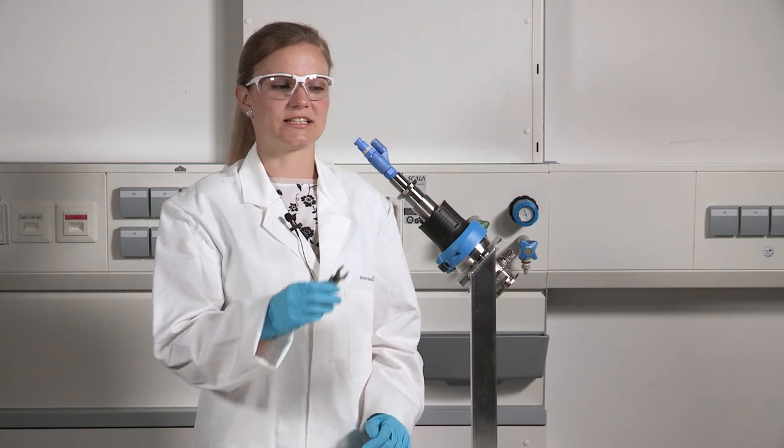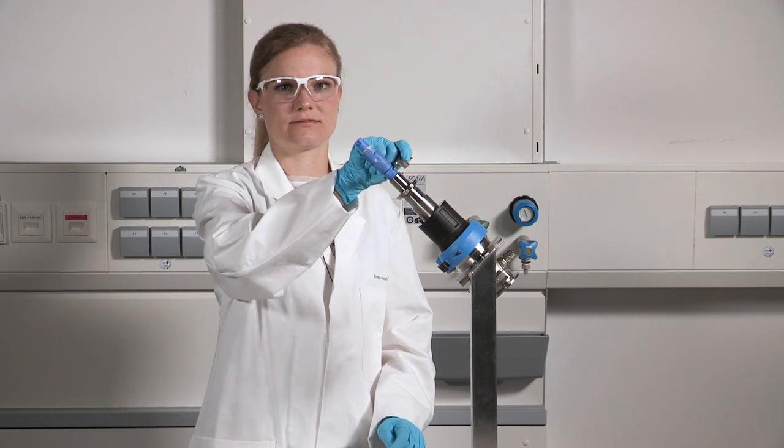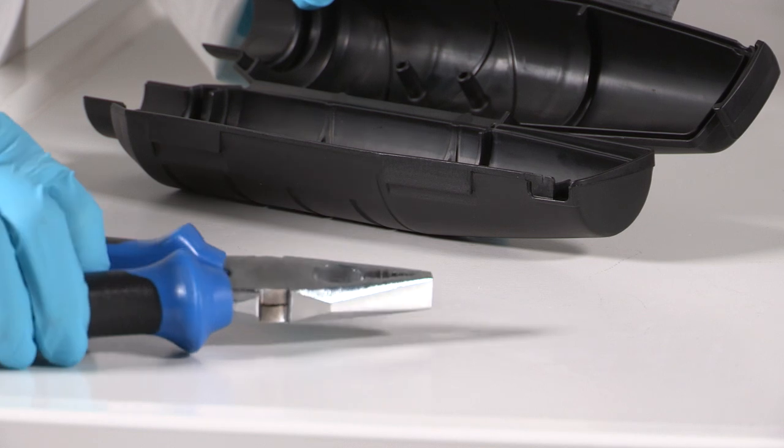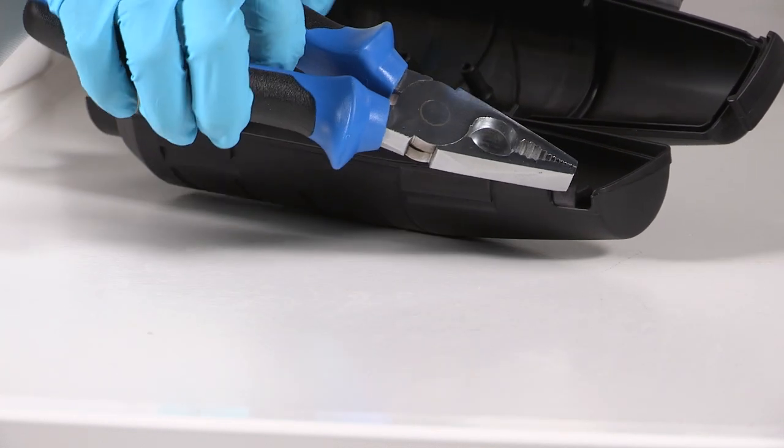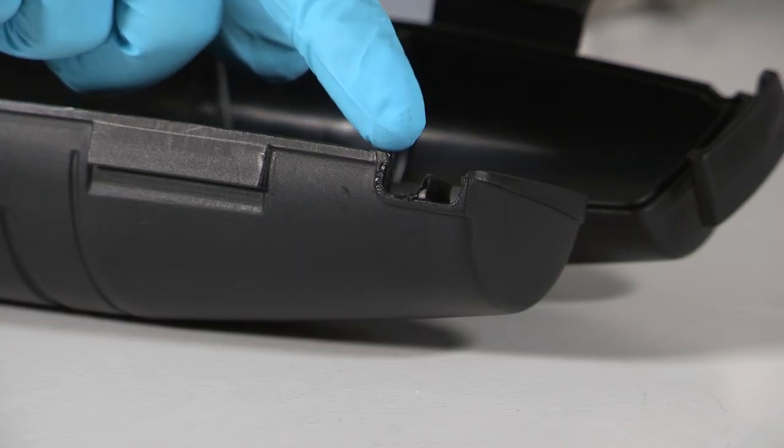The sensor can be screwed in directly without removing the retraction pipe. Use the universal pliers to create an opening for the KCL supply hose at the predetermined breaking point of the protection cover.